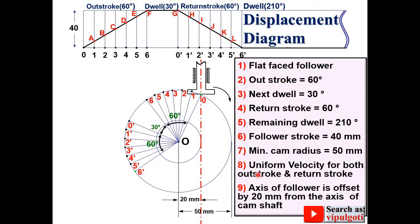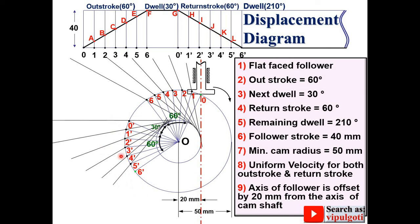Keep in mind that when your offset distance is given to you, you have to draw the tangent line to this offset circle. I am going to draw the tangent lines to this offset circle. Simultaneously lines must pass through all these points. Similarly you can do for the return stroke, draw the tangent lines to this offset circle and simultaneously must pass through 0 dash, 1 dash up to 6 dash.